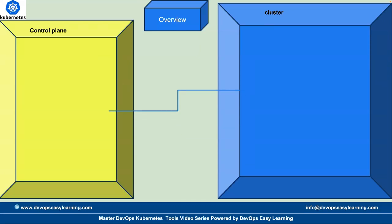Inside the control plane, we have the scheduler, which is the element that is there to schedule workloads inside the cluster. We also have etcd — etcd is the element that stores important information about the cluster. When Kubernetes wants to know what's happening in the cluster, it reads etcd, which stores data as key-value pairs.